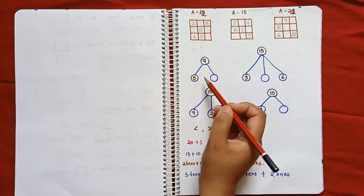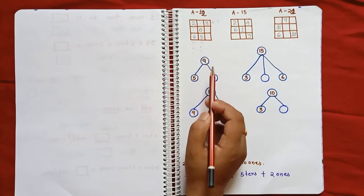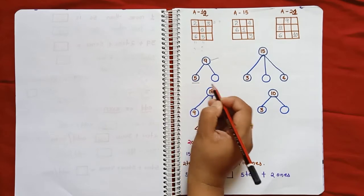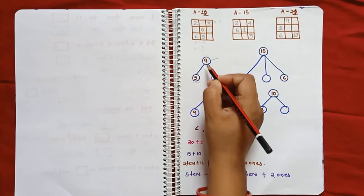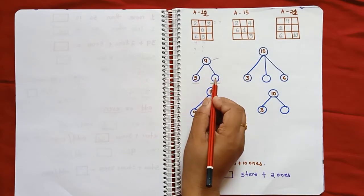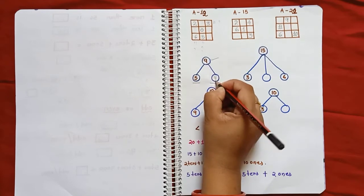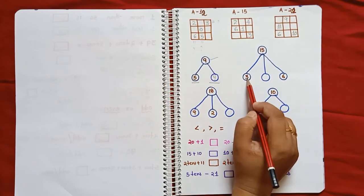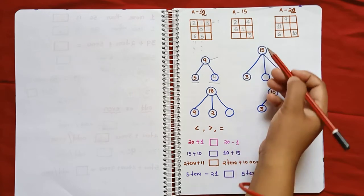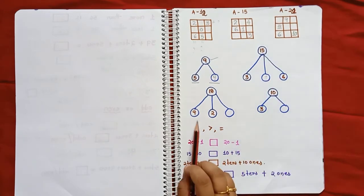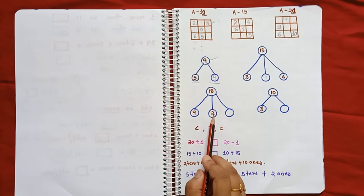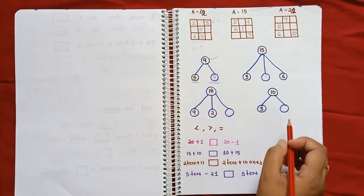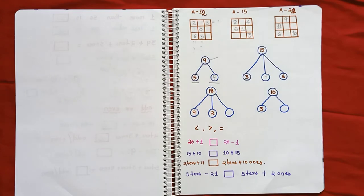Next question: I have given missing number addition problems. For example, 5 plus which number equals 9? The answer is 4. Then 6 plus 3 equals 9. Also, 9 plus which number equals 15 — here it is; 9 plus which number equals 18; and 11 plus which number equals 18 — the answer is 8. Add and check which answer comes out.